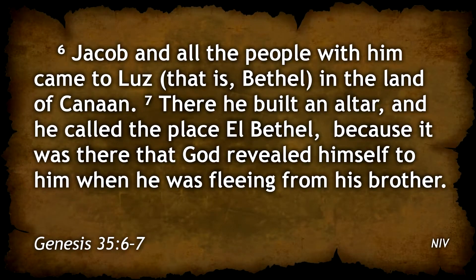The Lord told Jacob to go to Bethel and settle there — the place where Jacob had first encountered the Lord when he was fleeing from his brother Esau many years earlier. So that's where they went. The Lord protected Jacob's family so that the other peoples did not seek revenge. We're picking the story up today in Genesis chapter 35, verse 6: Jacob and all the people with him came to Luz, that is Bethel, in the land of Canaan. There he built an altar and called the place El Bethel, because it was there that God revealed himself to him when he was fleeing from his brother.